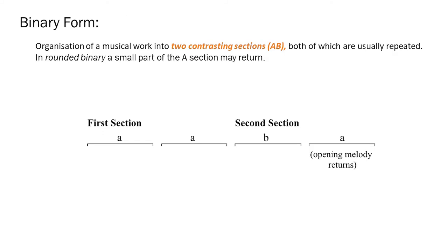There's another form called rounded binary, which has some similarities to ternary form, in that the A melody returns. But the key difference is that it doesn't return in its entirety. Only a small section of it does. We often see this in the movements within a minuet or a trio. Take a look at the example in your work package.